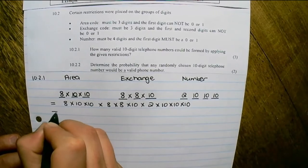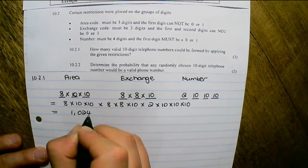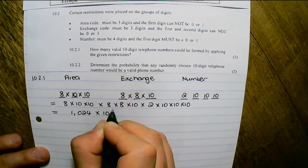If we multiply out, we find that this is 1.024 × 10 to the power of 9.